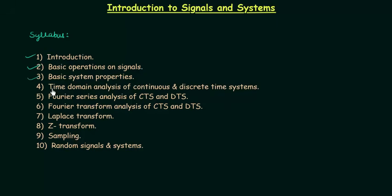In the third part we need to learn the basic system properties like static, dynamic, causal, non-causal, etc. The fourth part is the time domain analysis of continuous and discrete time systems. The fifth part is the Fourier series analysis of continuous time signals (CTS) and discrete time signals (DTS).